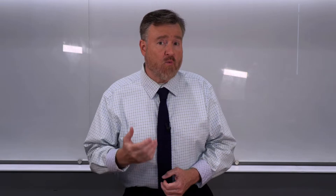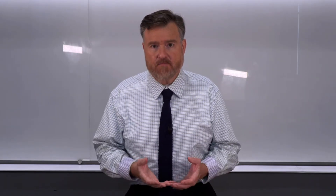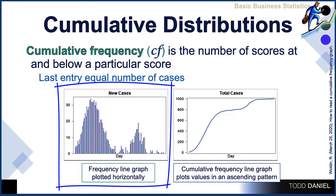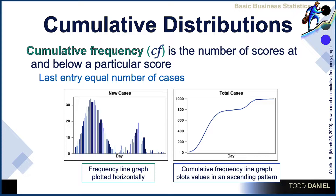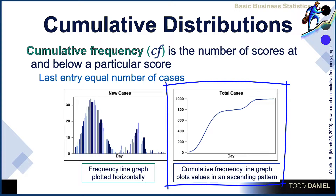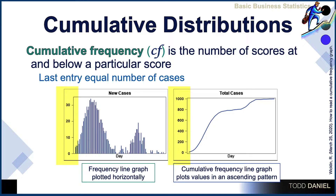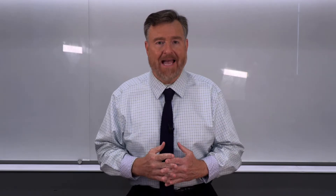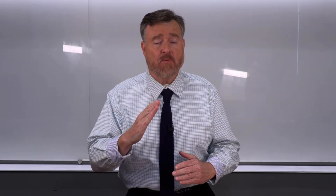Frequency distributions often work well compared with other graphs, for instance a histogram. In this histogram, we are displaying the daily number of new cases of a particular virus that is going around. As we add new cases, we will see an increase in the cumulative frequency. Notice that the y-axis for the histogram and cumulative frequency are very different — the y-axis for new cases runs up to around 30, whereas the y-axis for total cases adds up to around 1,000. In the first days where there are five, six, or ten new cases, there is a slight increase in the cumulative frequency, but as more and more cases are added, the slope of that cumulative frequency line increases.